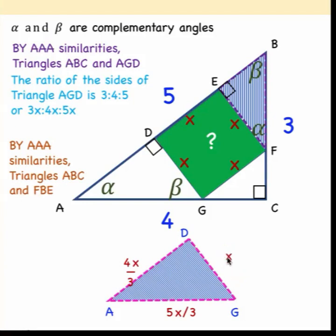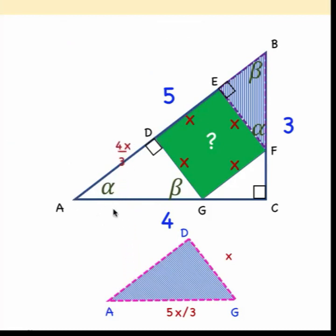Notice now that this x is the same as this, so we can now bring this triangle back here, which means that the length AD must be equal to 4x over 3. So we already know our expression for the length of side AD.